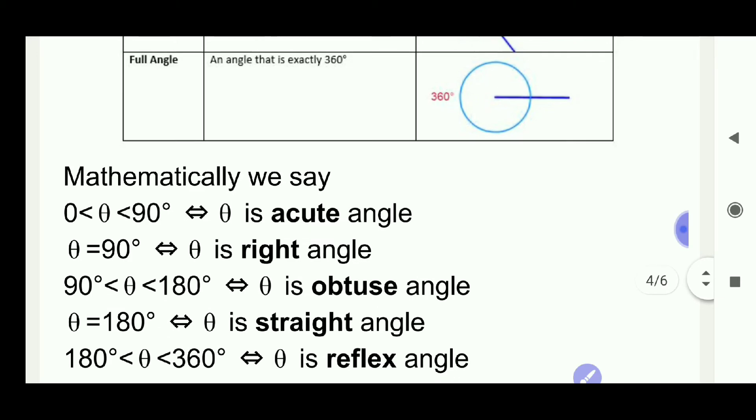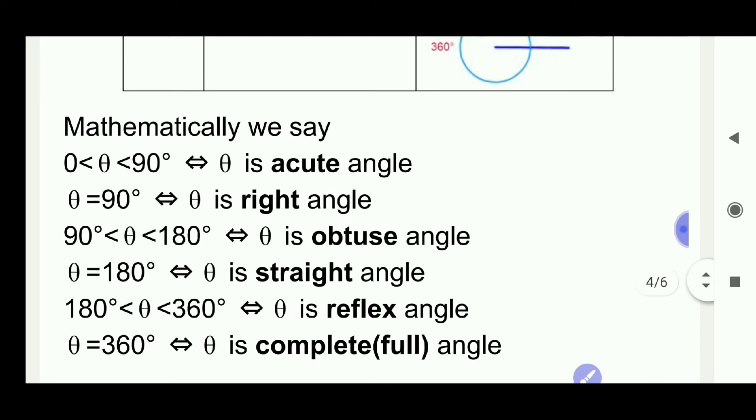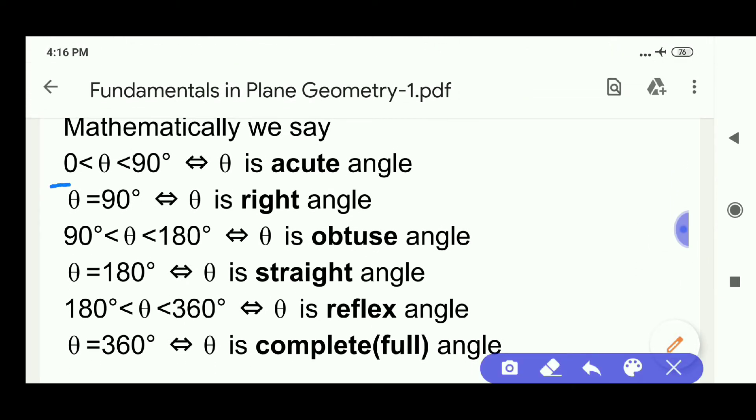Mathematically we represent as 0 less than theta less than 90, bi-implies theta is acute angle. Theta is equal to 90 degrees bi-implies theta is right angle. If theta is 180 degrees, then theta is called straight angle.